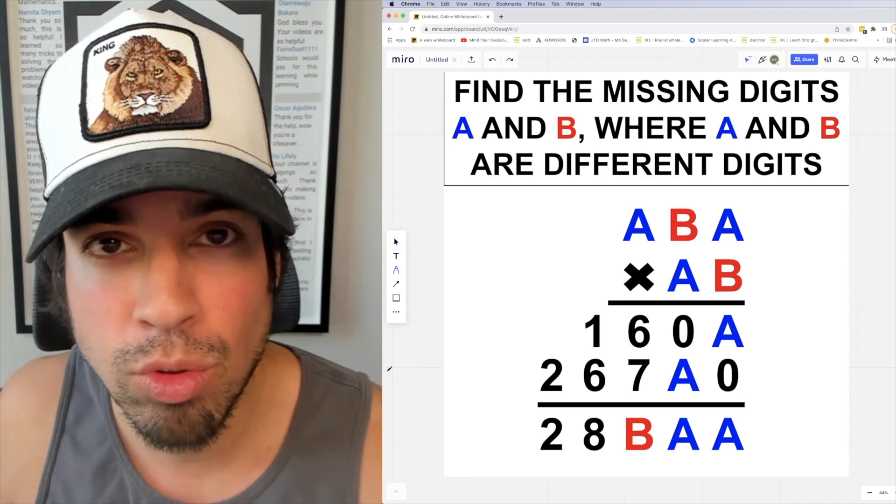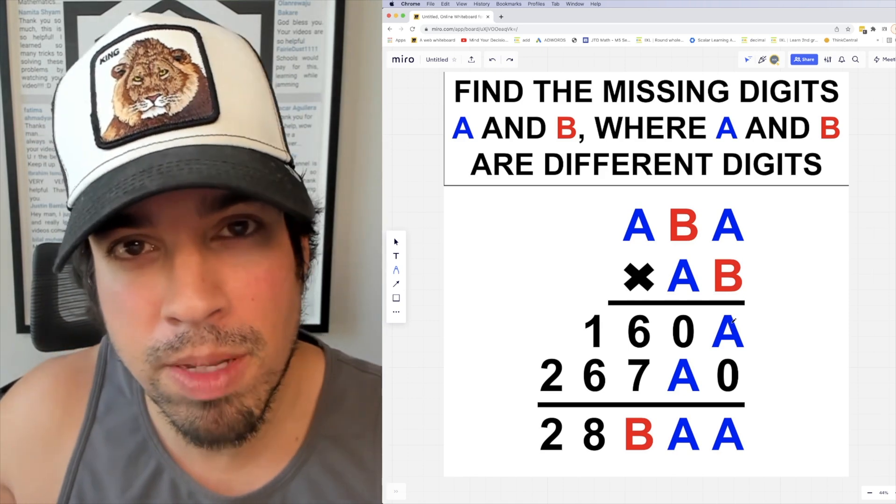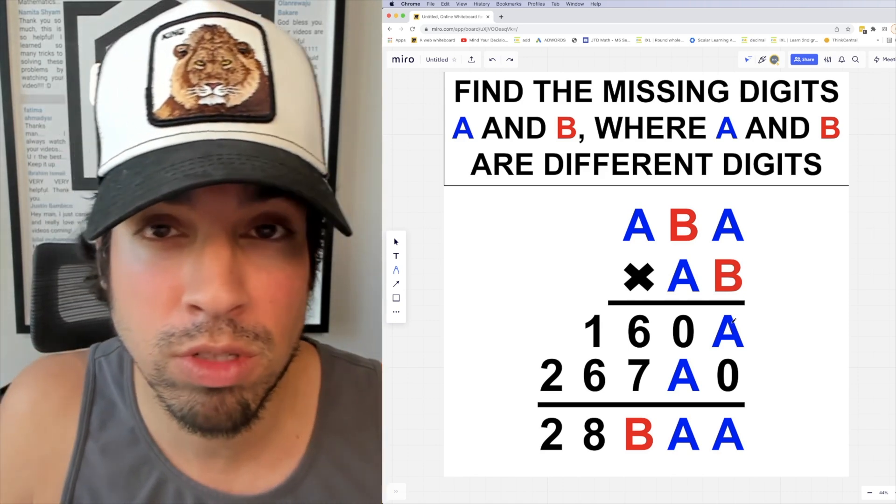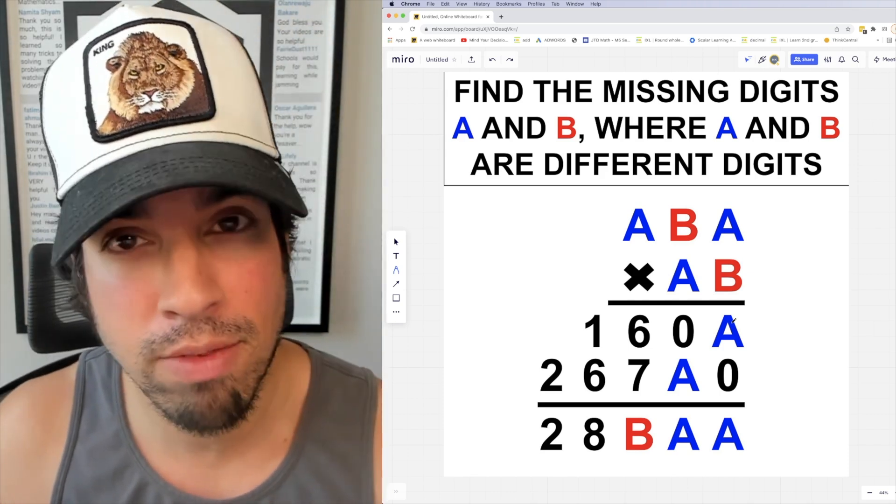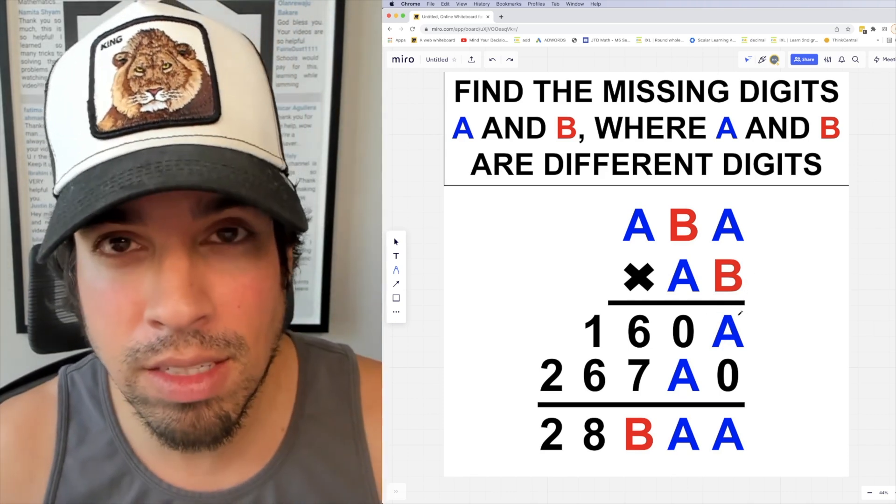Now we can see that B times A is A, which has some limitations. It limits our choices in certain ways. For example, one of those numbers could be one and the other one could be whatever. Now we know that B times A ends in A, right? But that doesn't give us a ton of conclusive information.